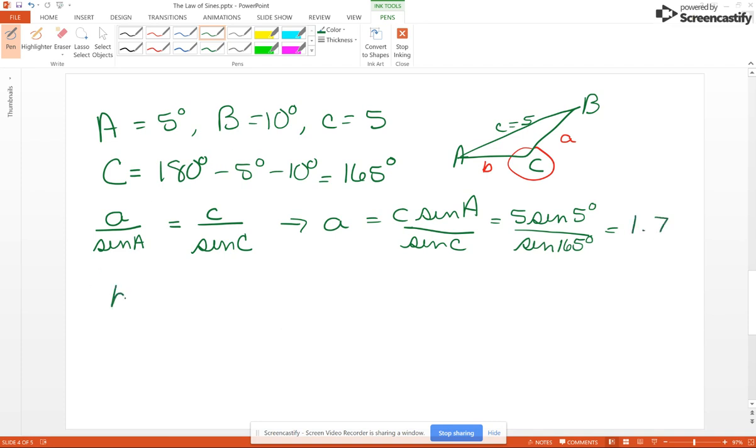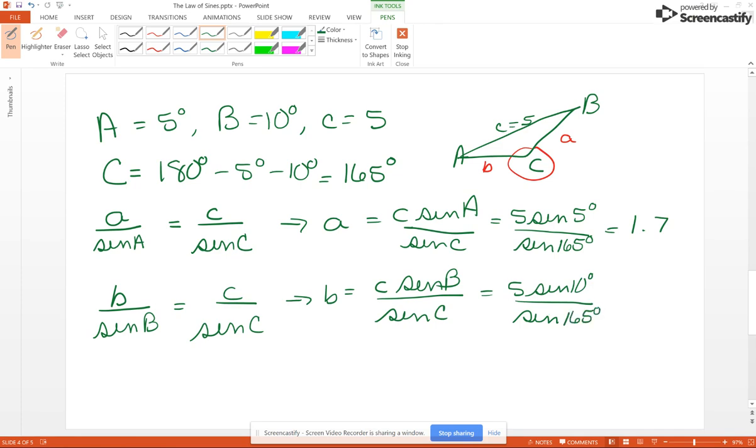Now for side B, we're going to have B over sine of B equals - I'm going to use the same thing - C over sine of C. So B is going to be side C sine of angle B divided by sine of angle C. So 5 sine of 10 over sine of 165. And that's going to give us - when we put that into our calculator - 3.4.